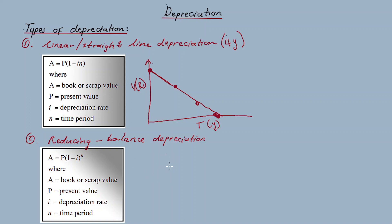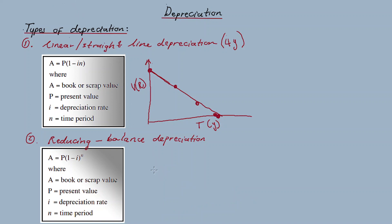Then with the reducing balance, you would obtain a graph that resembles a parabolic shape — something like a parabola.